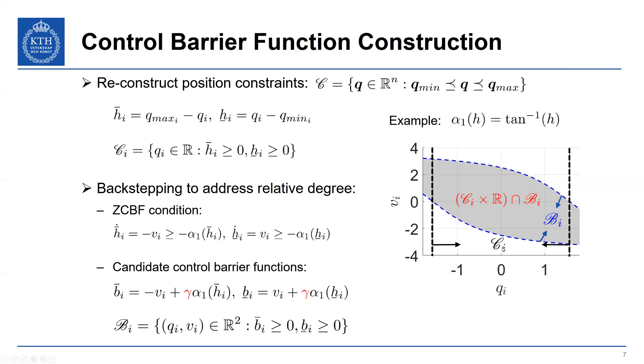So to implement the control barrier function approach, we're going to go through a backstepping technique because as we try to do the ZCBF condition, we realize that when you take the derivative of H, we don't have any control input here. We just have velocity and position constraints. We can't enforce these. So what we have to do is define a new function, which I will refer to as the candidate control barrier functions, where we simply rewrite these conditions into another function.